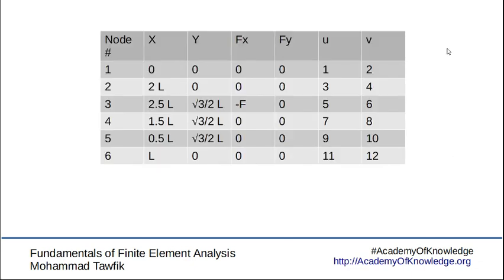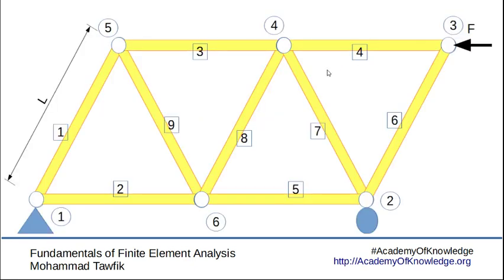For the previous truss, we had six nodes. Each node has its X and Y coordinates, as well as externally applied forces and degrees of freedom. Each node may move in the X and Y directions, so each has U and V degrees of freedom. We also have to identify the number of that degree of freedom in the global matrix for each node.